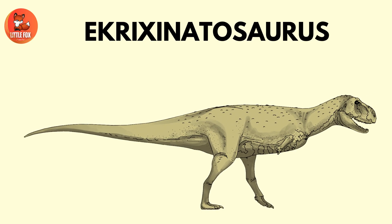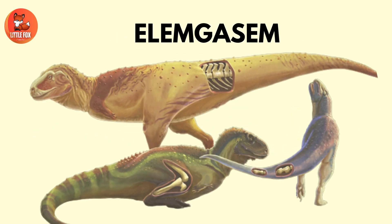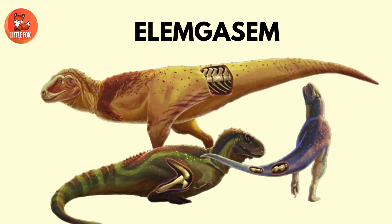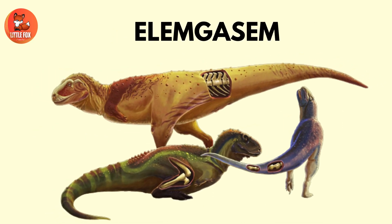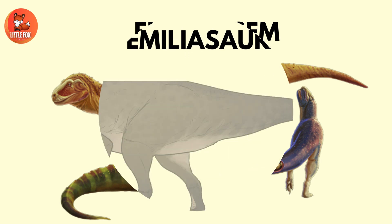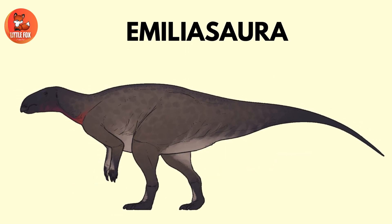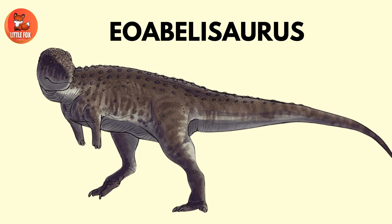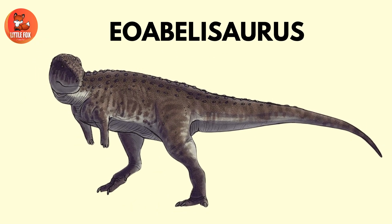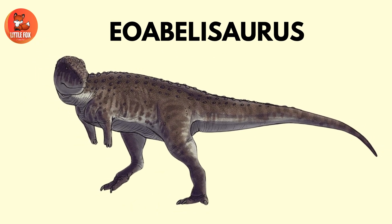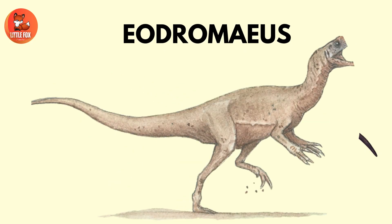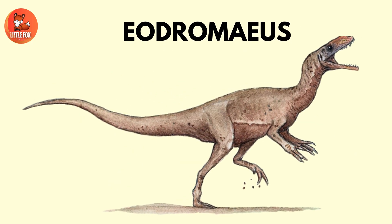Number 43: Elamgassum. Number 44: Emeliosaurus. Number 45: Eoabellosaurus. Number 46: Eodromaeus.